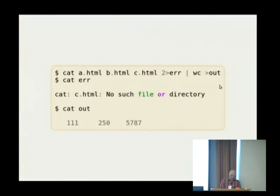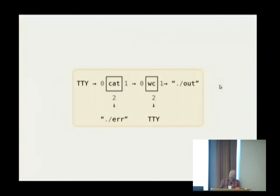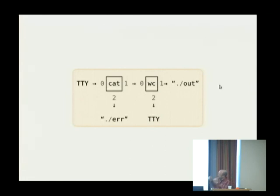You can explicitly redirect file descriptor number two into a little file called ERR, and put the output of wc into a file called out — which results in no output on screen. You now have the error message captured in one file, the output captured in another, because you've used shell redirection to get the two data streams each into a separate place. Standard error is really wonderful because it lets you build a big pipeline of commands where data is streaming, never confused by error messages, because it goes somewhere else.